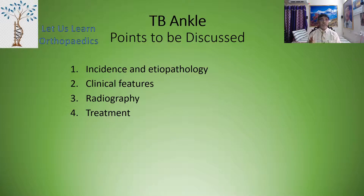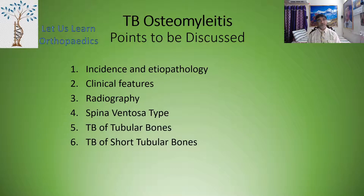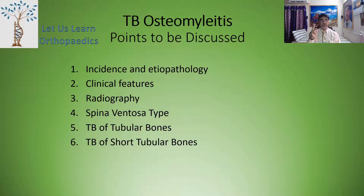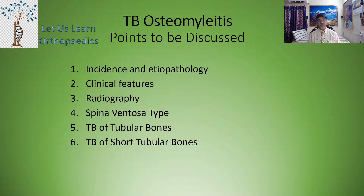For TB ankle, again four points: incidence, etiopathology, clinical features, radiography, and treatment. For tuberculosis osteomyelitis, six points will be discussed: incidence and etiopathology, clinical features, radiography, spina ventosa type osteomyelitis, TB of the tubular bones, and TB of the short tubular bones.